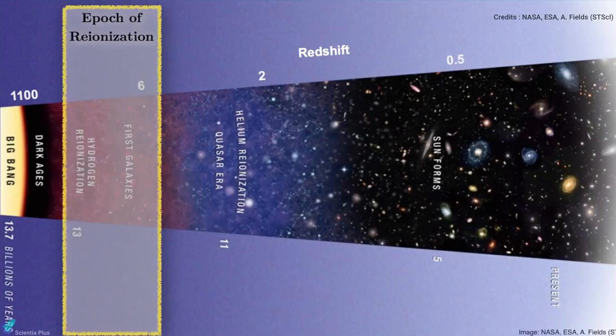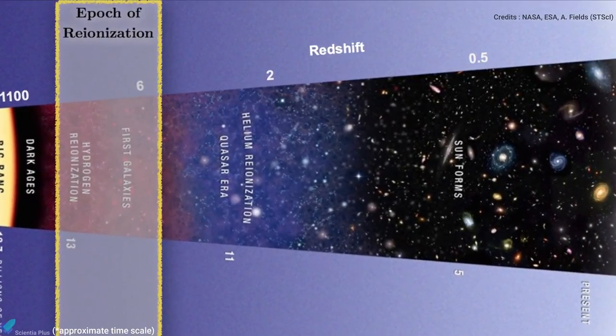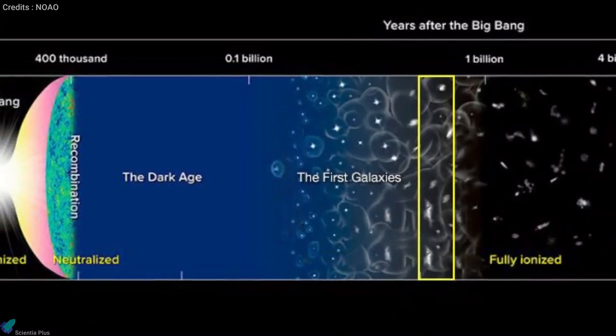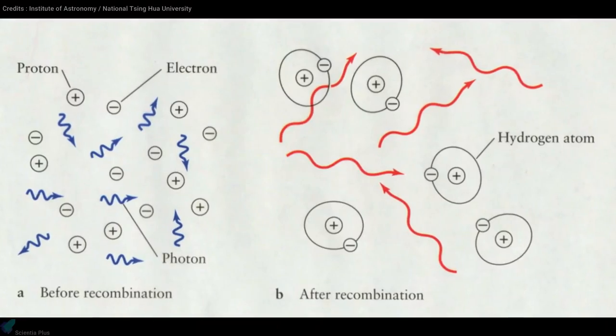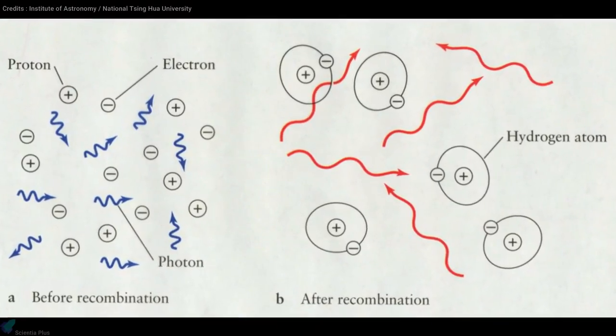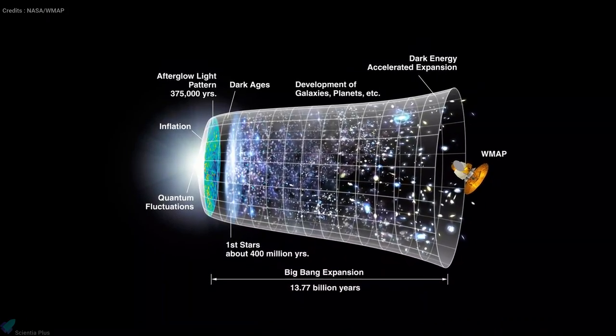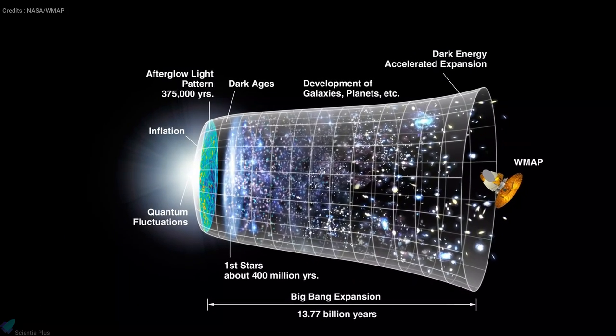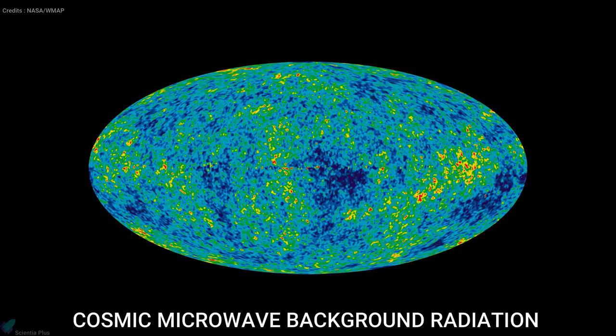This discovery will reveal insights into the reionization era that happened between 150 million and 1 billion years after the Big Bang. Prior to the reionization era, there was a period of recombination, during which charged electrons and protons combined to become neutral hydrogen atoms. This period, known as the Dark Ages of the Universe, occurred 300,000 years after the Big Bang, during which there were no light sources other than the gradually redshifting cosmic background radiation.